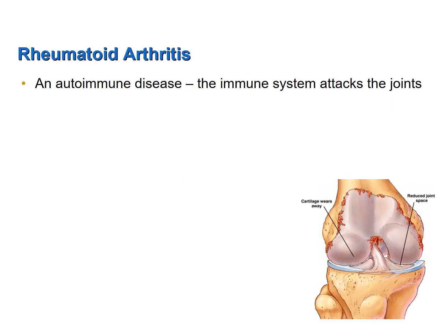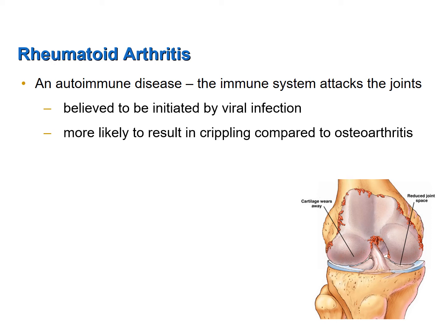Rheumatoid arthritis is an autoimmune disease, where the immune system attacks one's own body — specifically, the joints. The reason for this is not completely understood. There is some belief that it's initiated by a viral infection. As the body attacks proteins of a virus, some viral proteins are very similar to the proteins found in synovial membranes. As the body is sensitized against viral proteins, it's also sensitized against synovial membrane proteins. Thus, the immune system attacks the synovial membranes of the joints.